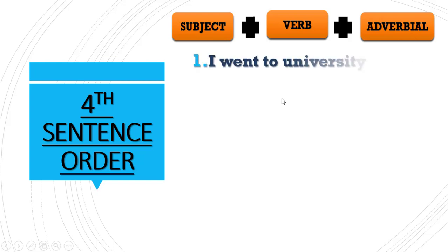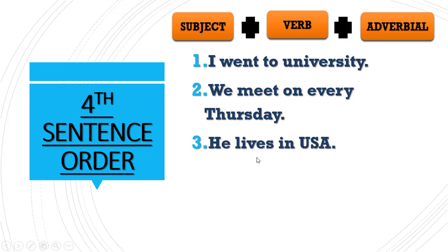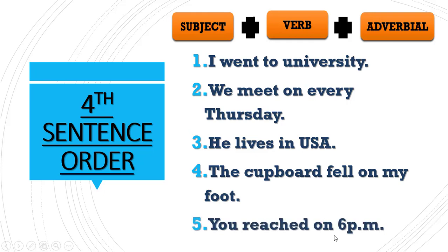The fourth sentence structure is subject plus verb plus adverbial. Examples: 'I went to university' — 'I' is subject, 'went' is verb, 'to university' is the adverbial phrase. 'We meet on every Thursday' — 'on every Thursday' is the adverbial phrase. 'He lives in USA' — 'in USA' is the adverbial phrase, which is an adverb of place. 'The cupboard fell on my foot.' 'You reach at 6 p.m.' — 'at 6 p.m.' is the adverb.